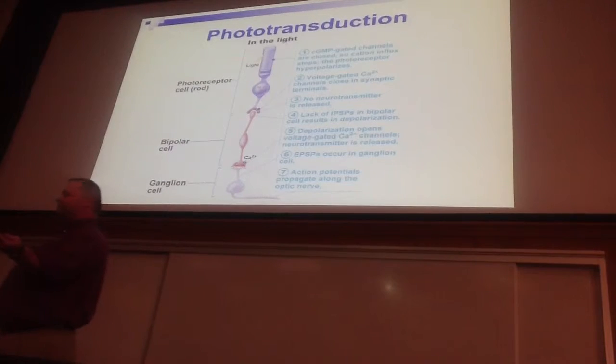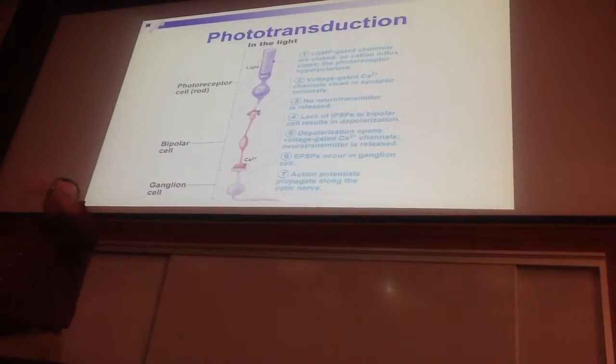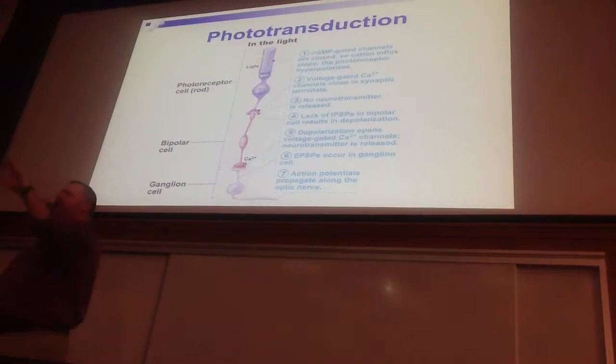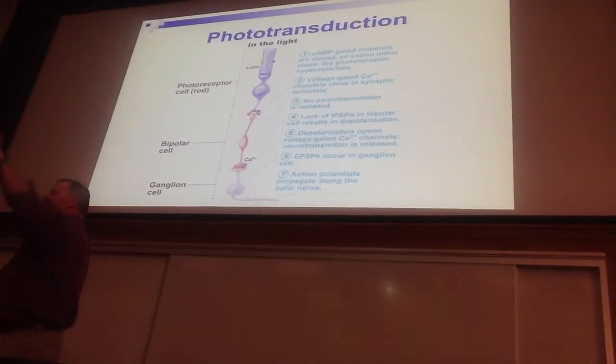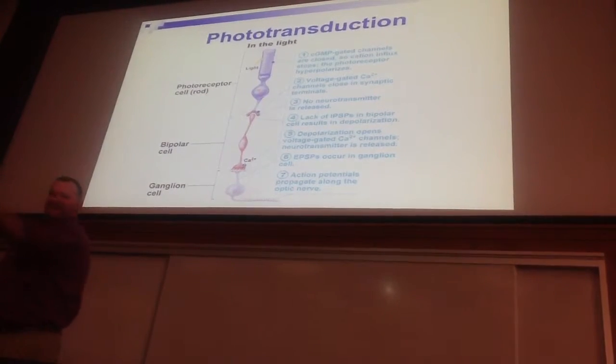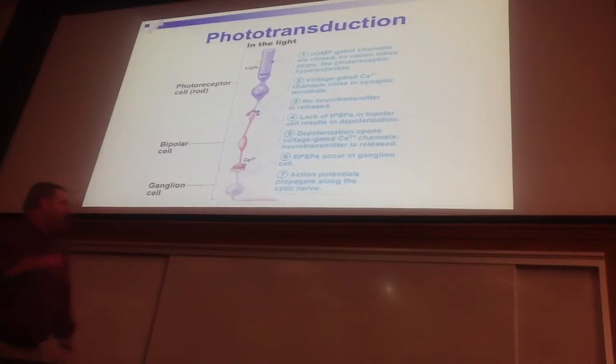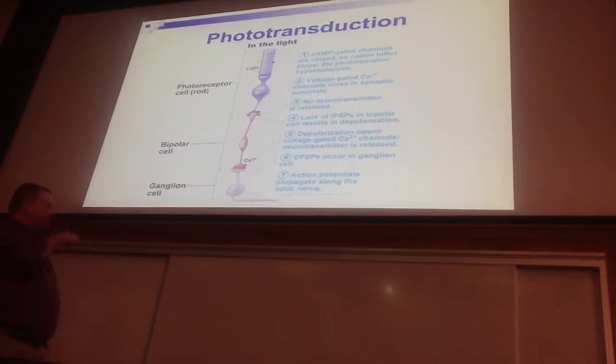The photoreceptor is back to rest. It's off, not releasing inhibitory neurotransmitter anymore. Immediately, the bipolar cell starts firing action potentials, releasing its excitatory neurotransmitter onto the ganglion cell.